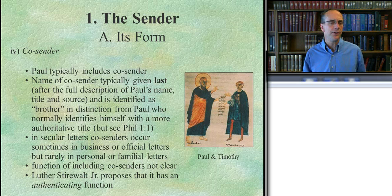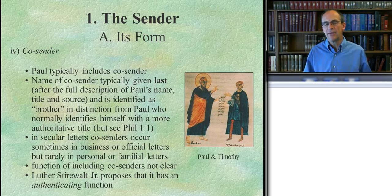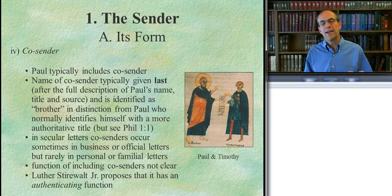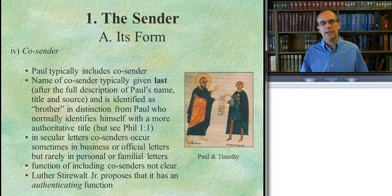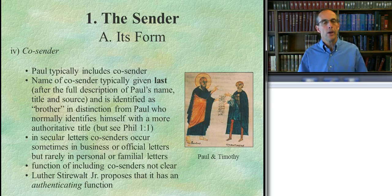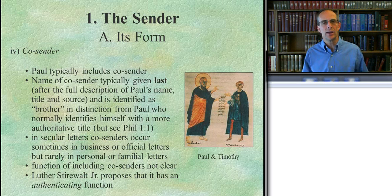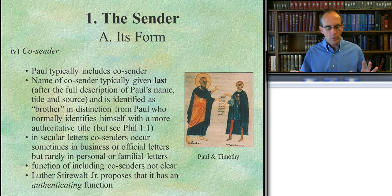A fourth thing Paul has is a co-sender. This is a little unusual, because most letters in Paul's day did not have a co-sender, though some did. This raises the question of why Paul includes a co-sender. When you have two names — Paul and Timothy — or three names — Paul, Timothy, and Silas — who is the real author? Is it a group project, or is Paul the ultimate author who includes co-senders for another reason? I think the latter is the stronger answer. The notes give proposed reasons, but we won't get bogged down with those details now.